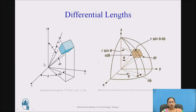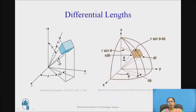Now the differential lengths. If this is dr, the small variation along the radial length is dr. If this is phi, the small variation along that direction is dφ. If this is theta, the small variation in that direction is dθ. But can I say dθ and dφ are lengths? Surely we cannot — dθ and dφ are angles and not lengths.